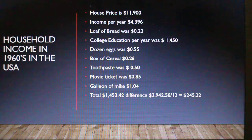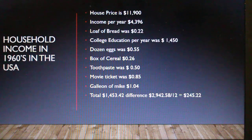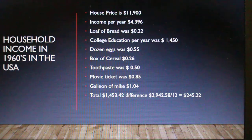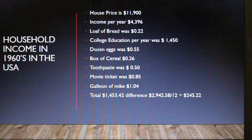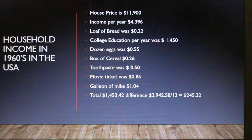Once you had a job, you had a relatively good standard of living. Now in the 1960s, the average cost of a home was $11,900, and the average income per year was $4,396. A loaf of bread was 22 cents, college education was coming on board at $1,450, a dozen eggs was 55 cents, cereal 26 cents, toothpaste 50 cents, a movie ticket 85 cents, and a gallon of gas was $1.04. The total living costs came to about $1,453.